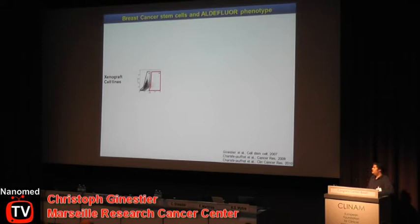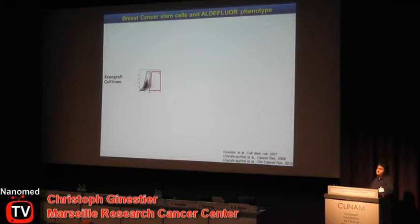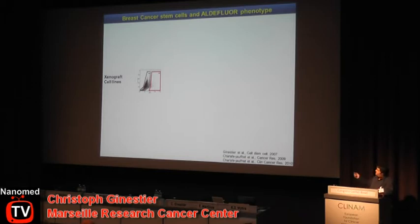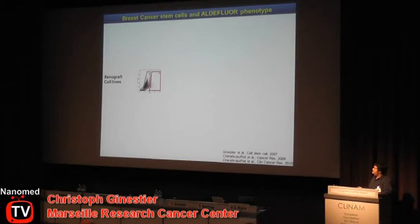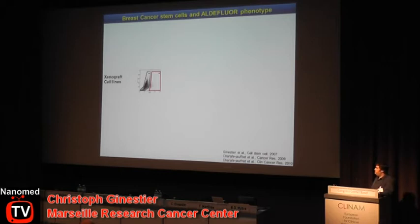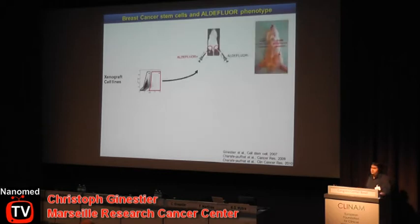To see if we have this kind of organization in tumors, we used a simple assay called the aldefluor assay, which isolates cells with high aldehyde dehydrogenase enzymatic activity. This test was originally used to isolate hematopoietic stem cells, and we applied it to breast tumors using a xenograft cell line model. We sorted the ALDH-positive cells from the ALDH-negative cells. As you can see, in most tumors the ALDH-positive population is very small — about 5 to 10%. When we injected ALDH-positive and ALDH-negative populations into NOD-SCID mice, only the ALDH-positive population was able to grow.